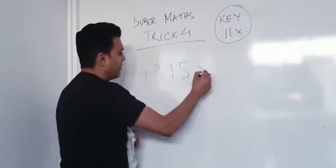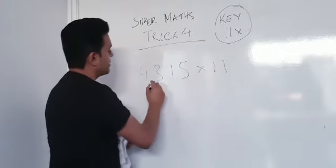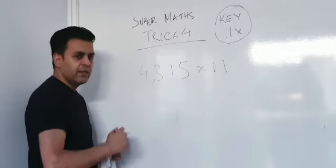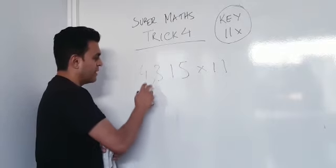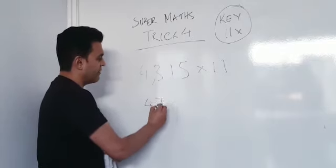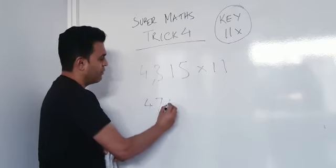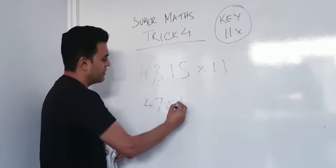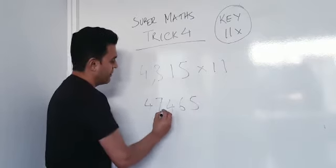Now, you already know 4,315 is, what's the first number? 4. Add those two together, 7. Add those two together, 4. Add those two together, 6. And your last number is 5.